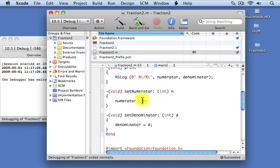Inside the method, we take that value of n, which is 1, and we stash it away inside our fraction's numerator instance variable.